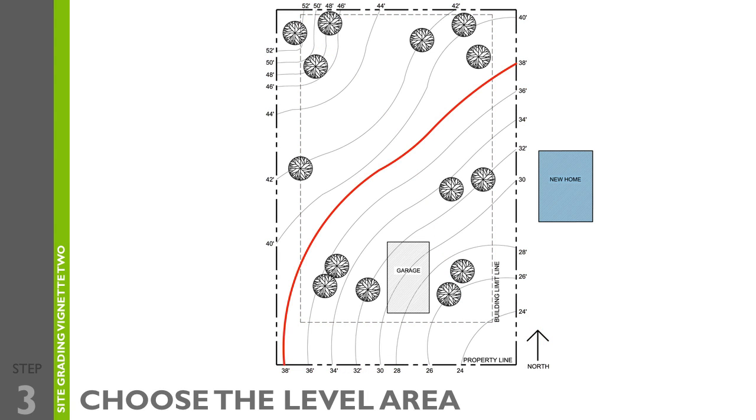In step number three, we're going to choose the level area. You can start by selecting a contour line for the location of the level area for the element that you are to place. Make sure it's away from any property lines, any elements that need to be protected, and steep sloping topography. As you can see here, the contour line at 38 feet would be a good location for the new home, as it is far enough away from the garage, but not too steep of a slope.